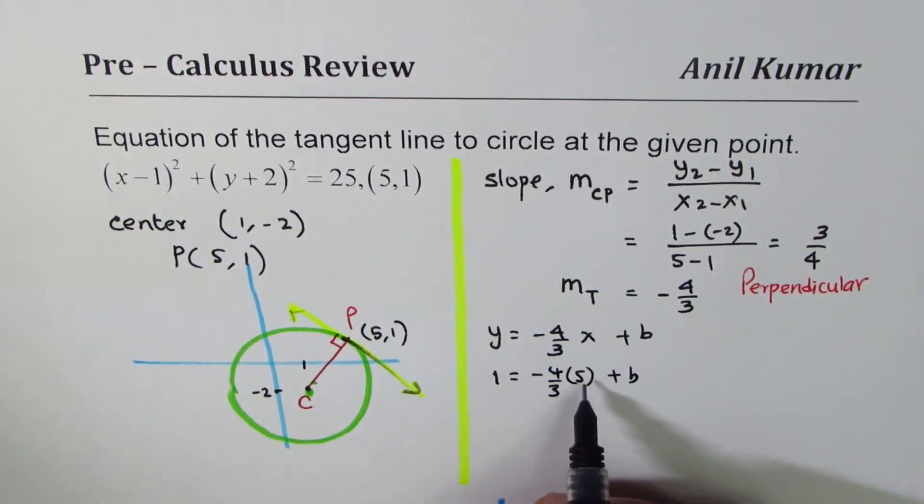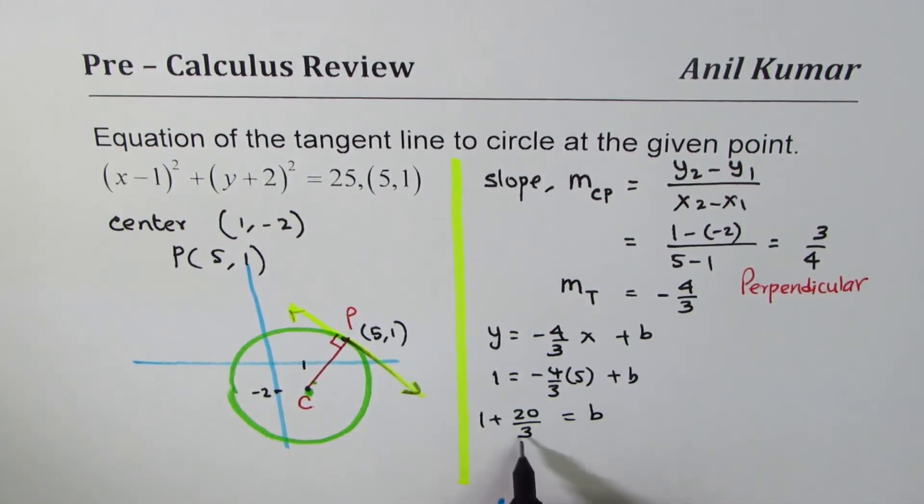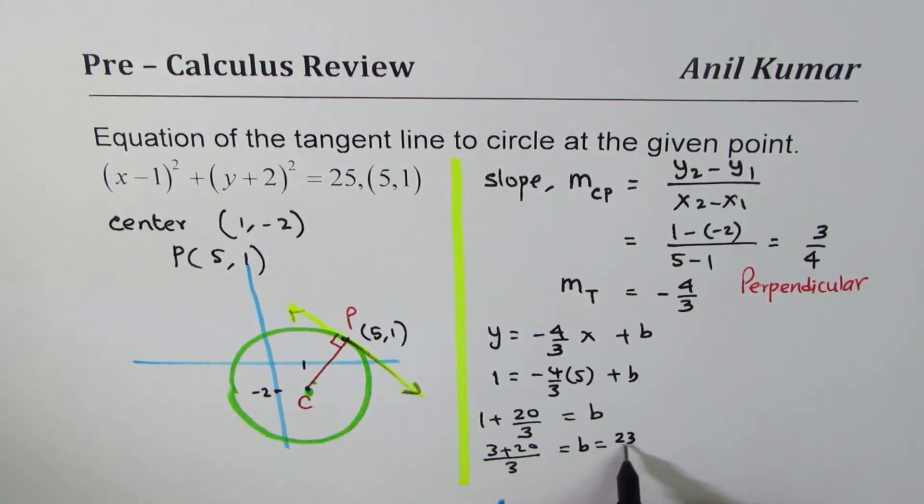Taking it to the right side, this becomes 20 over 3. So we get 1 plus 20 over 3 equals b. So if you take common denominator, 3, you'll get 3 plus 20 equals b, which is 23 over 3.